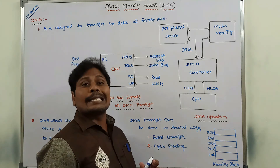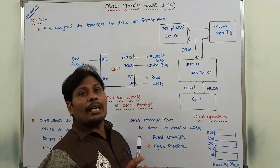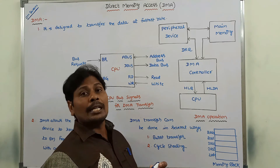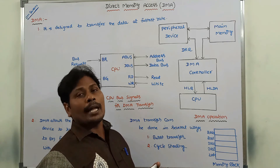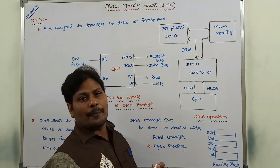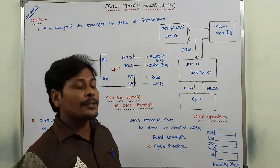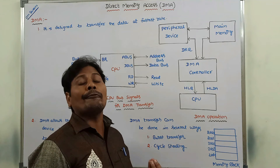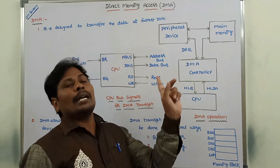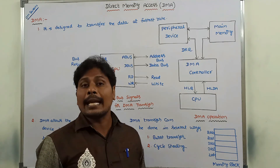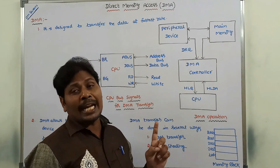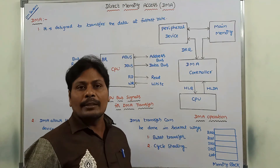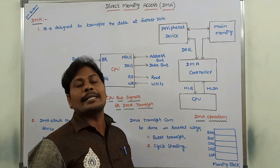Whereas in the case of cycle stealing, we are transferring one data word at a time. After transferring one data word, the DMA controller releases control over the memory buses back to the CPU. So, the difference between burst transfer and cycle stealing: in burst transfer, we transfer an entire block of words between the peripheral devices and main memory; whereas in cycle stealing, we transfer only one data word at a time.